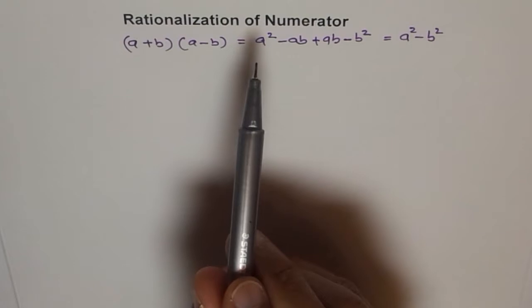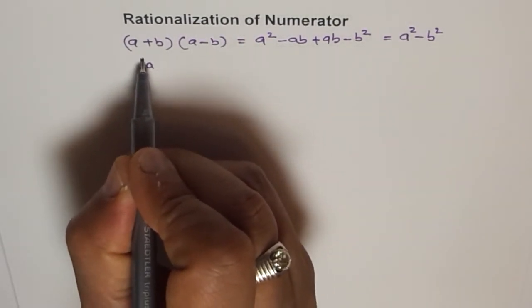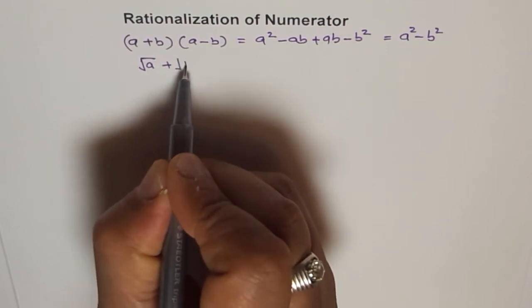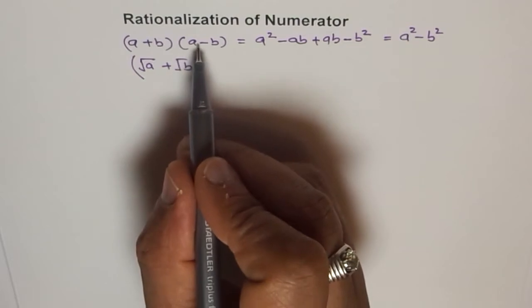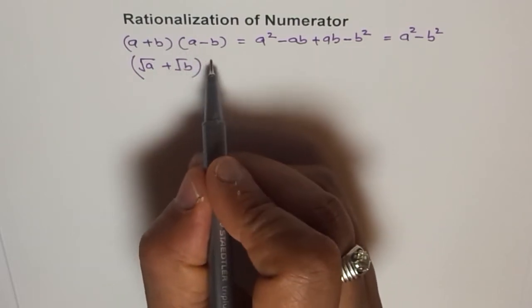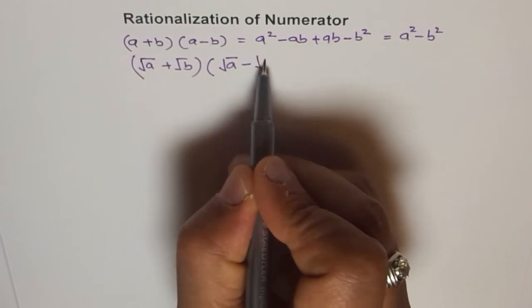And we use it for rationalization. So with rationalization, what happens is that let's say we have square root of a plus square root of b. And when you rationalize it, that means you are multiplying it by its conjugate. This term is called its conjugate. So you multiply by square root of a minus square root of b.